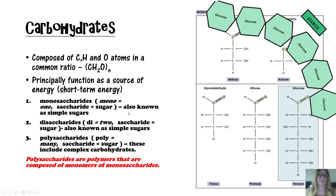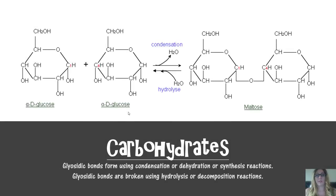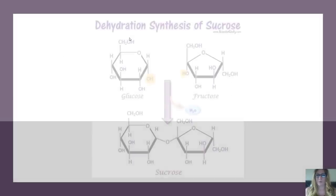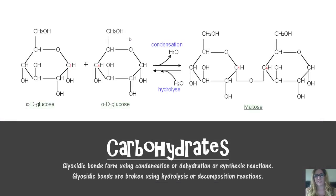Monosaccharides are also known as simple sugars. Disaccharides — like sucrose, our table sugar — are also considered simple sugars. Polysaccharides are considered complex carbohydrates. Monosaccharides come together via a synthesis reaction — a condensation or dehydration reaction with loss of water. Going the other way, breaking it apart is hydrolysis — cutting with water — also called a decomposition reaction.